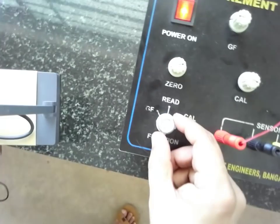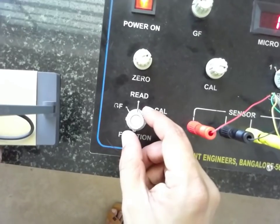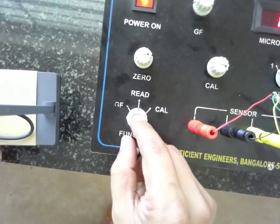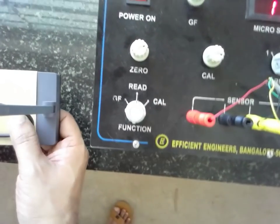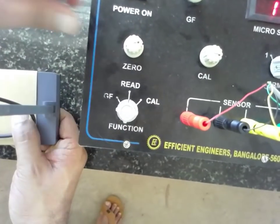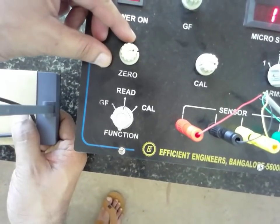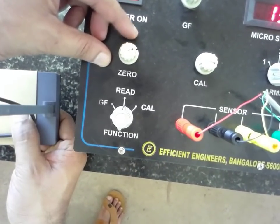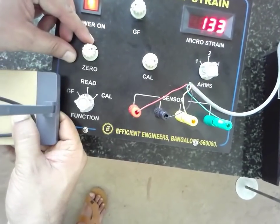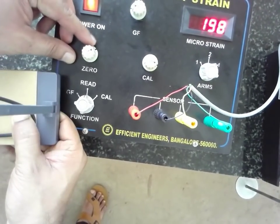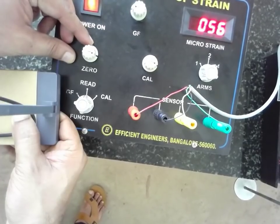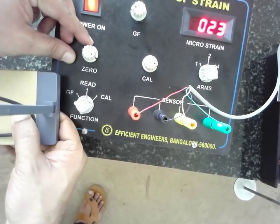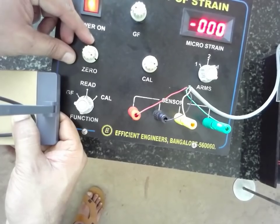Now come towards the read. This is a function knob. First make it to the read, and with the help of zero knob make the micro strain to zero. I will make it as zero. Now it is zero.